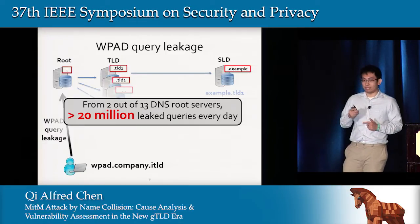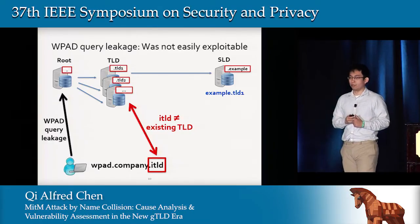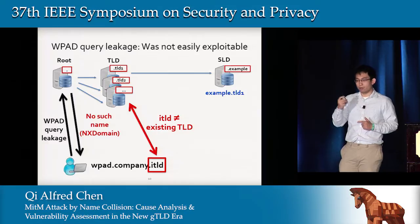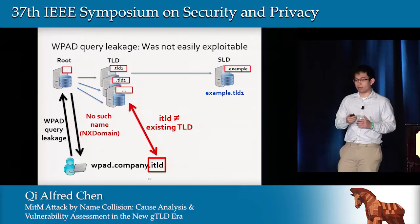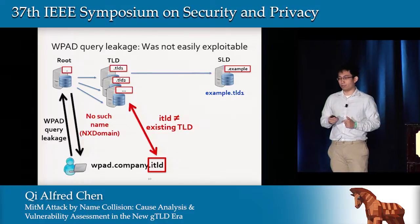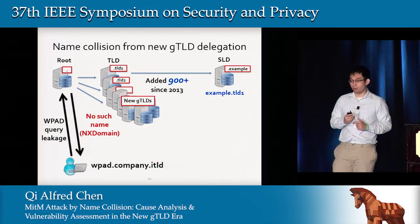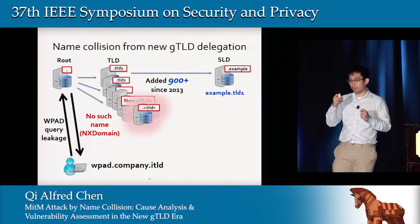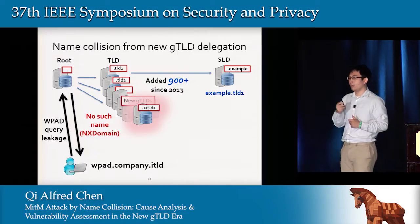In the past, this was not a very serious problem because the undelegated TLD strings used as internal TLDs meant leaked WPAD queries would just be answered by DNS root servers with an NX domain error — no such name exists. But this situation changed because of the new GTLD program, where over 9,000 new GTLDs have been added to the public namespace since 2013, making it the largest expansion ever.